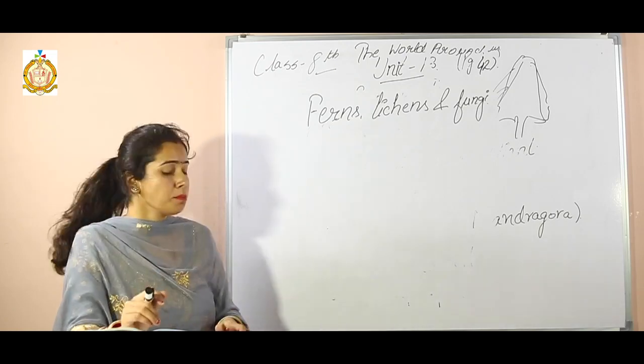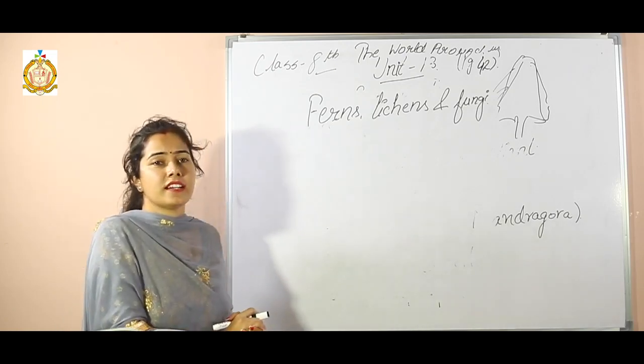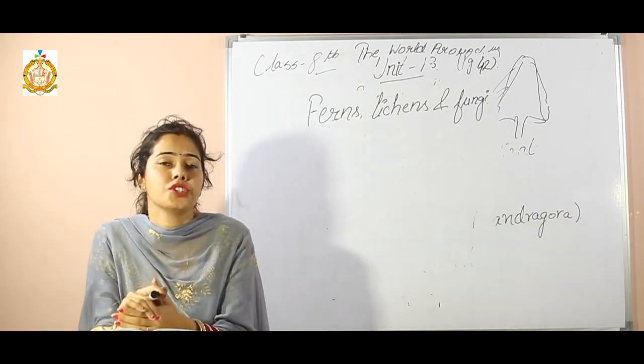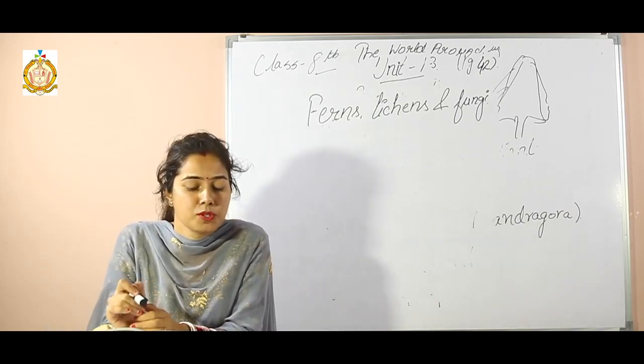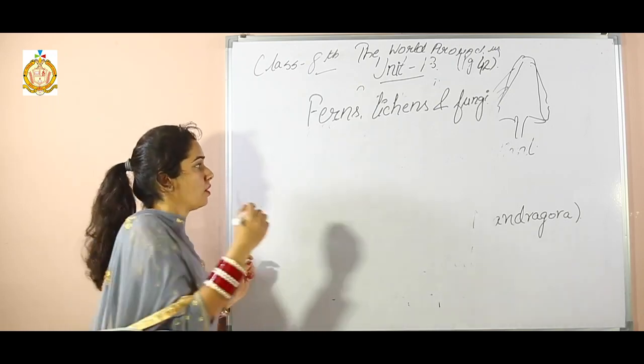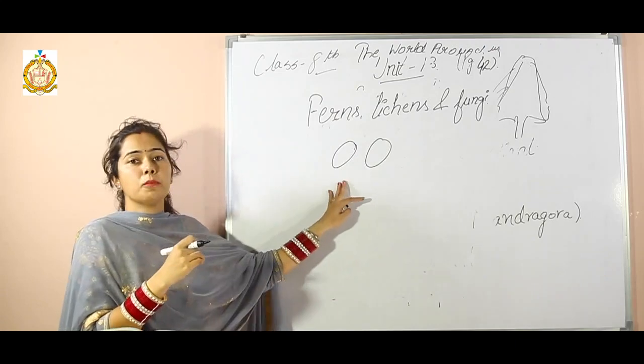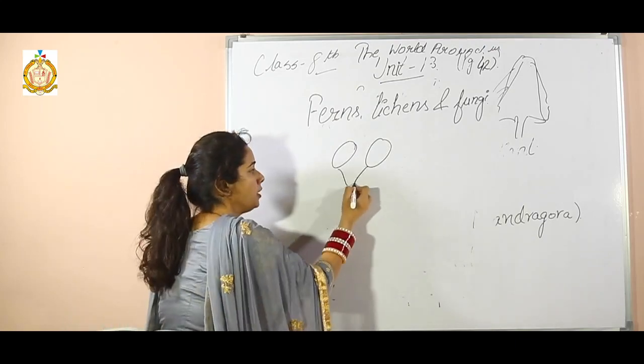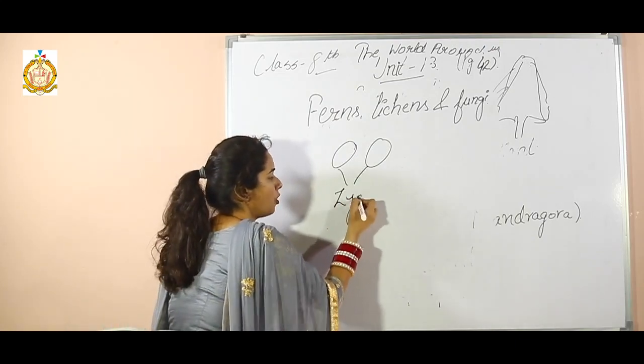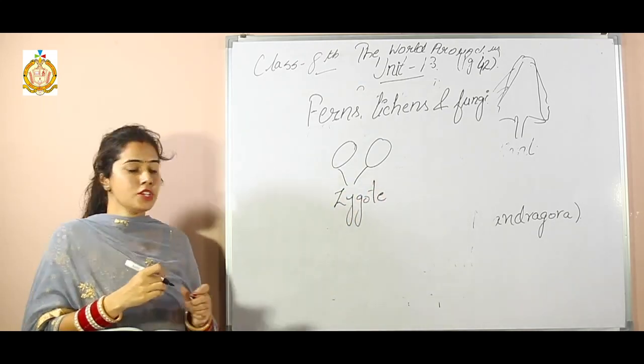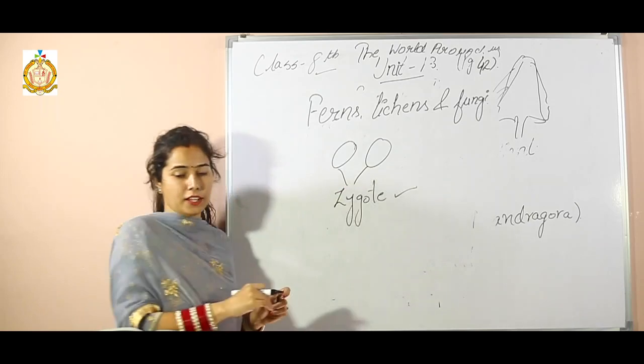Some questions like tick the correct answer in each case. The first question is the fusion of two gametes produces what? For example, if there are two gametes, it produces a zygote. These are biology terms. So tick on the zygote.